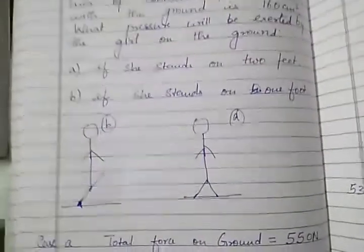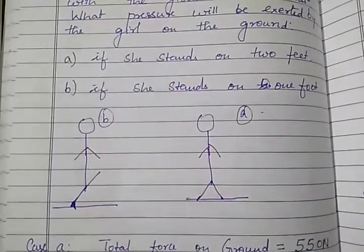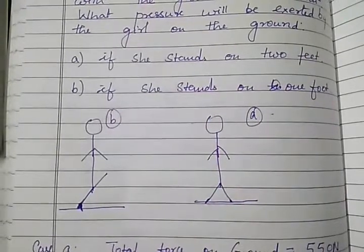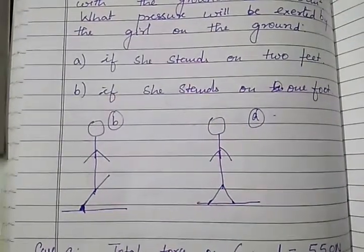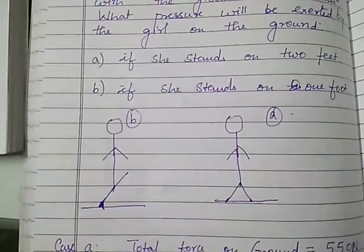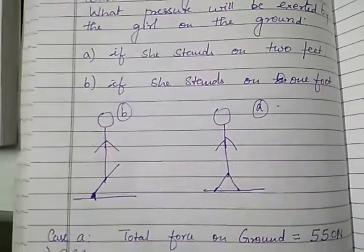So if you see the picture here I have shown what it means. In the first case A on the right hand side you can see that the girl is standing on two feet and in the second case it's on one foot.